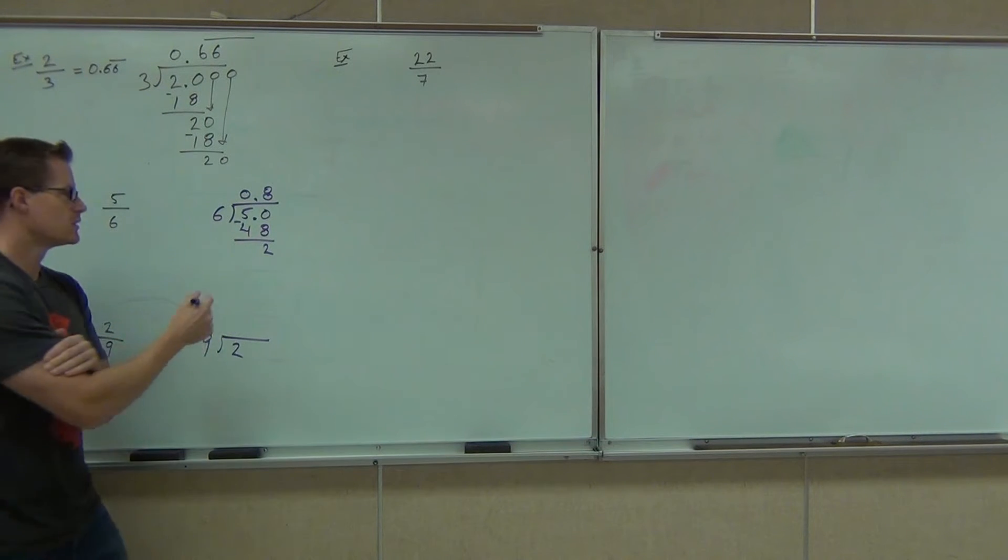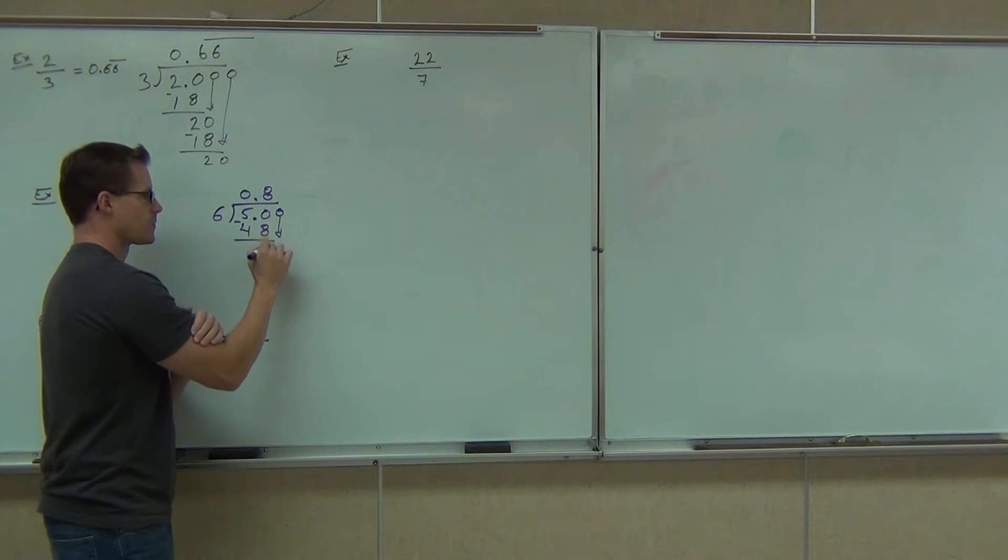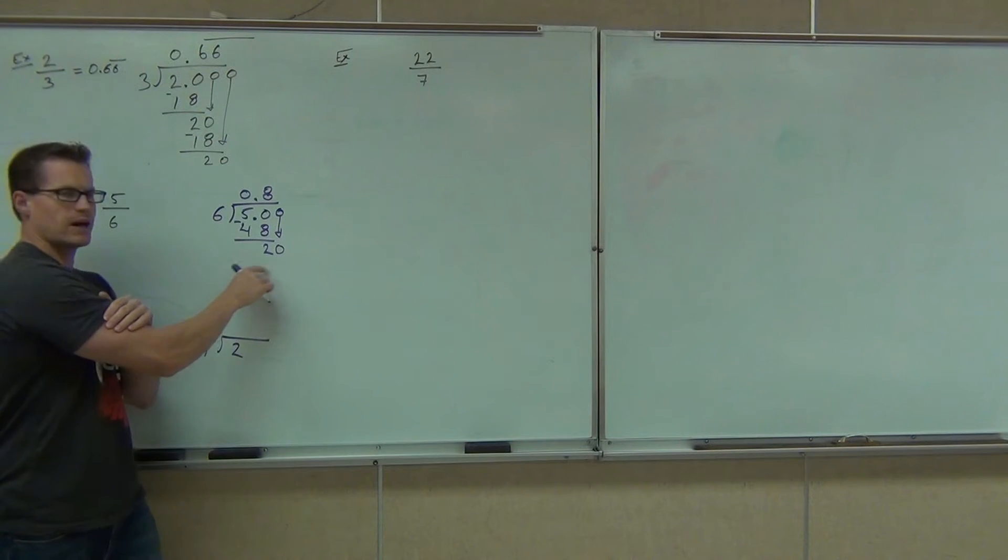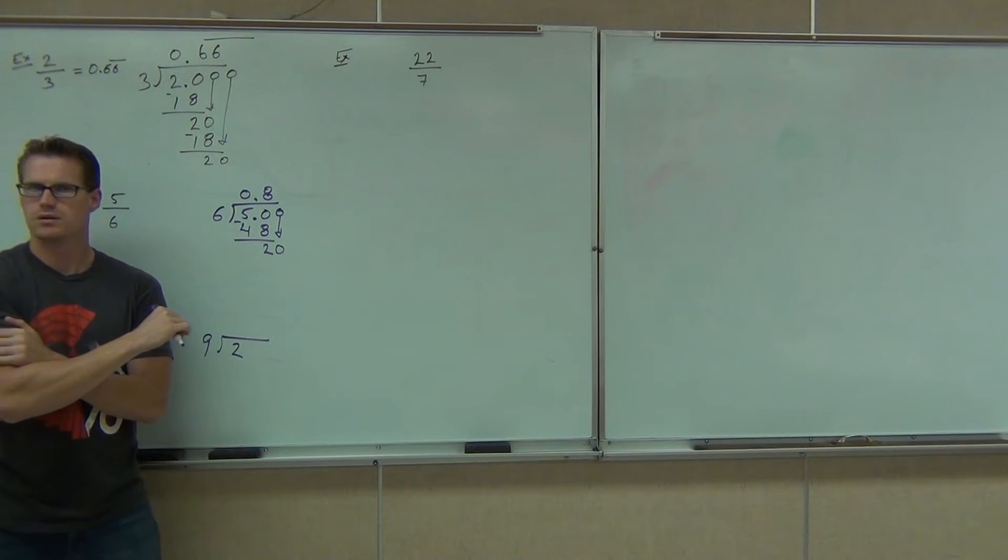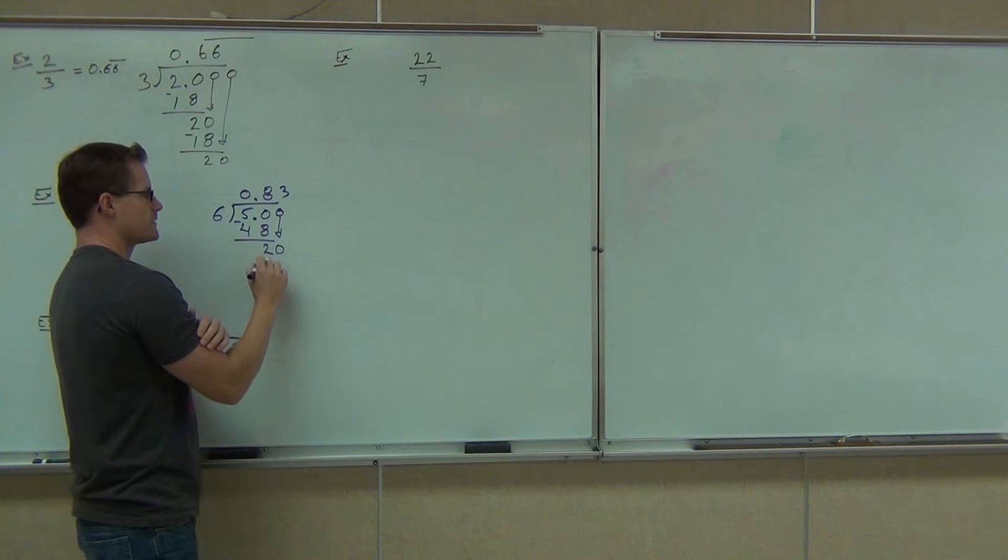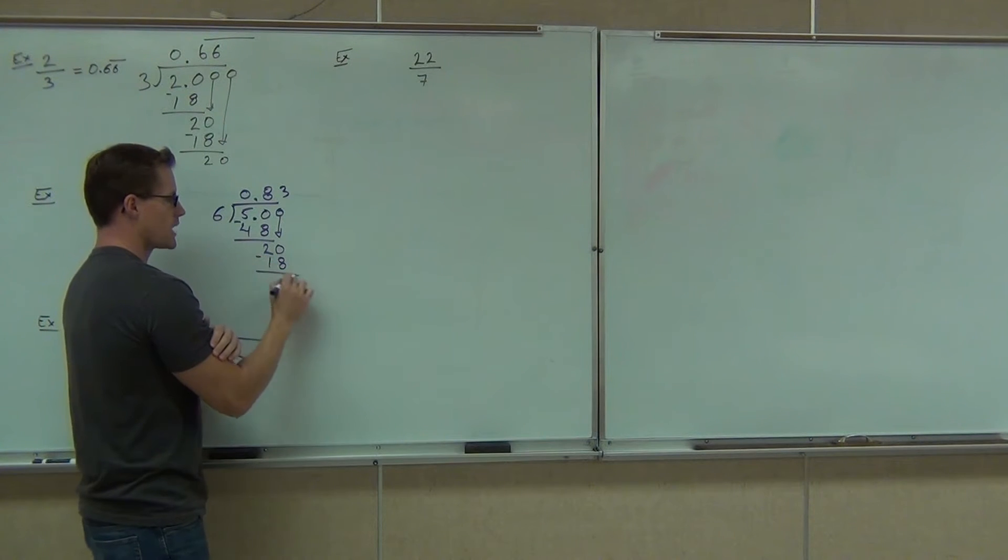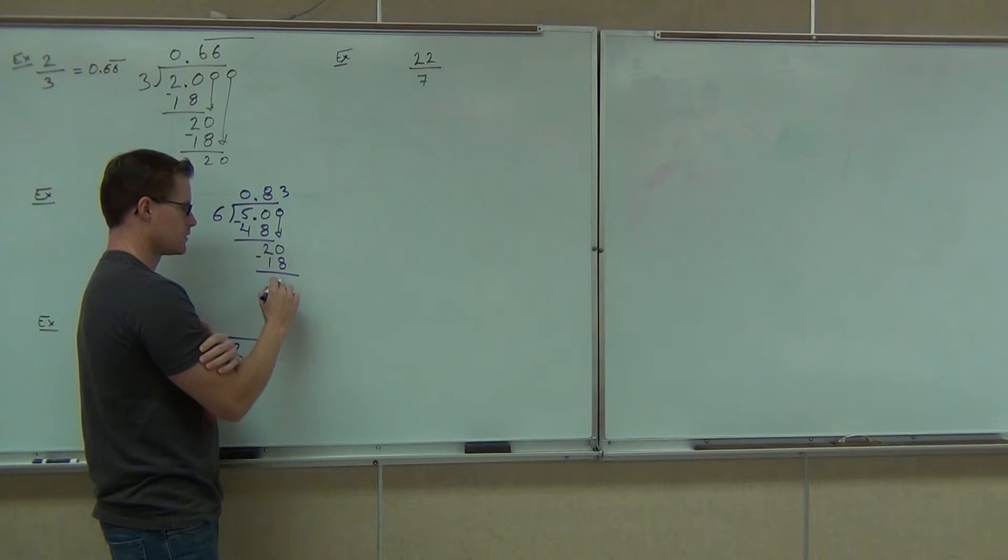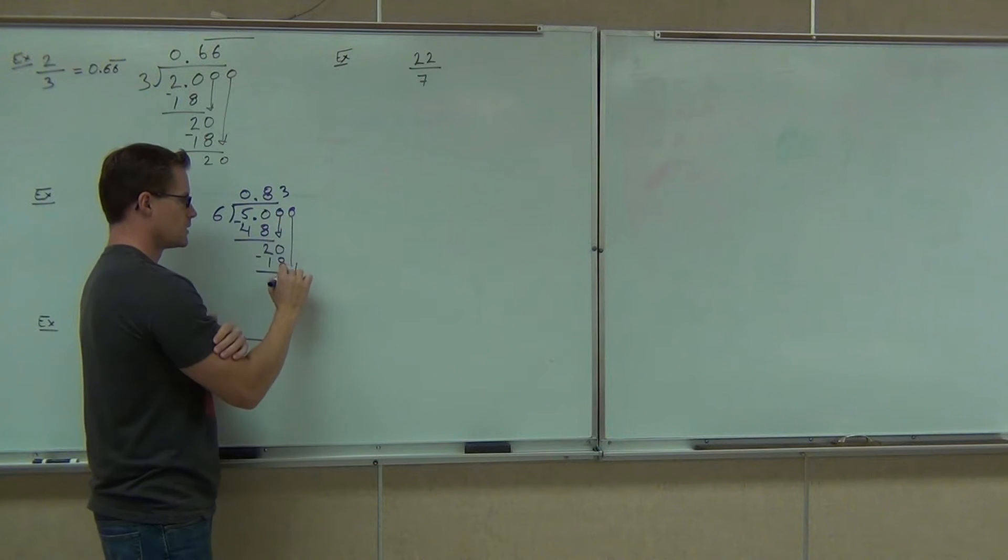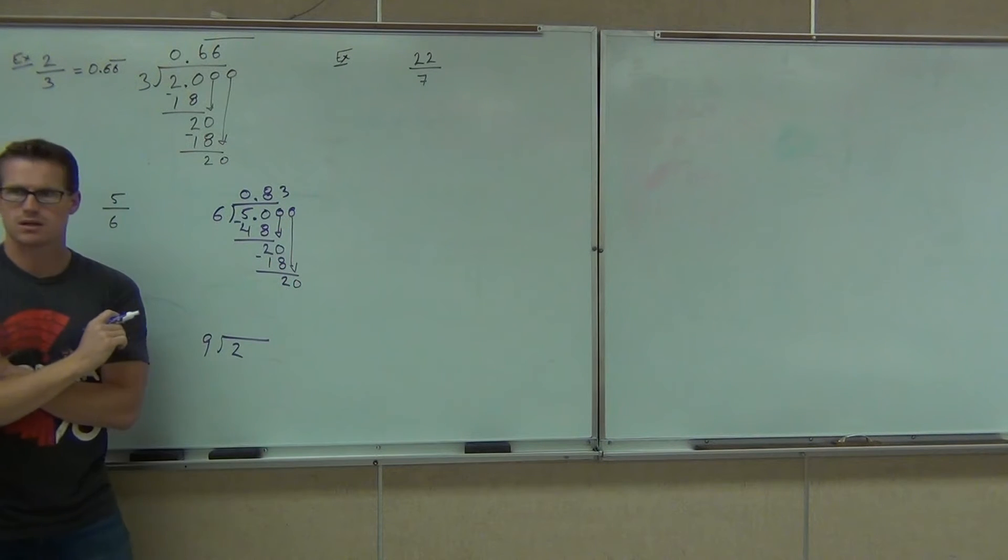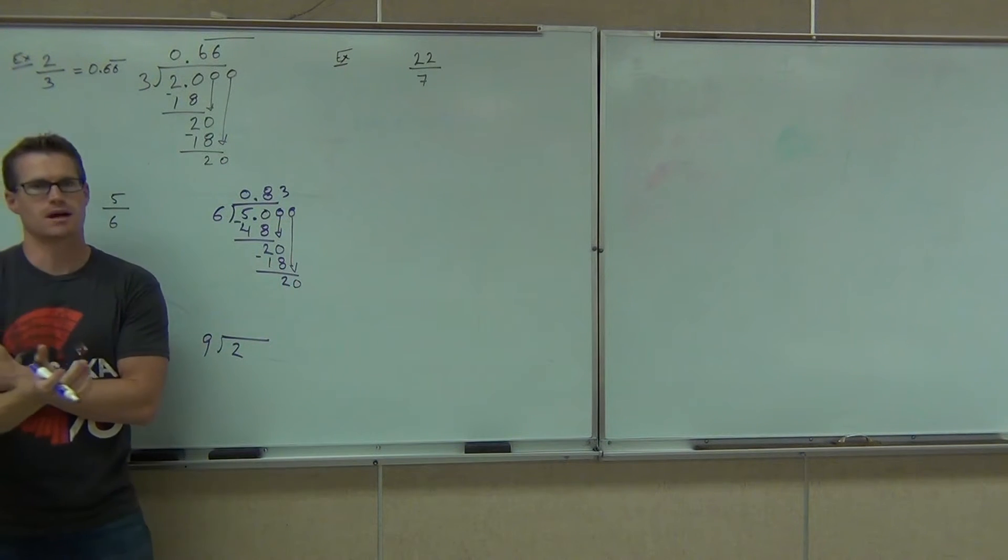We don't have a repeat yet. So if we add a zero, six goes into, how many times does six go into 20? Three. Three times, all right. That gives us 18. We subtract, we get what? Two. Zero. Do we have a repeat? Yes. We already have a repeat. That's kind of nice, so we have to keep going.